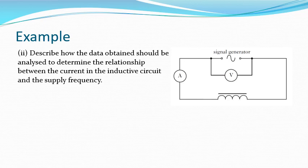To describe how the data should be analysed to determine the relationship between current in the inductive circuit and frequency, we look at the relationships for inductive reactance. Since X_L = 2πfL and X_L = V/I, rearranging for I gives I = V/(2πL) × (1/f). This is in the form y = mx, where y is current and x is 1/frequency. Plotting current against 1/frequency should give a straight line whose gradient equals V/(2πL), allowing us to determine the inductance.